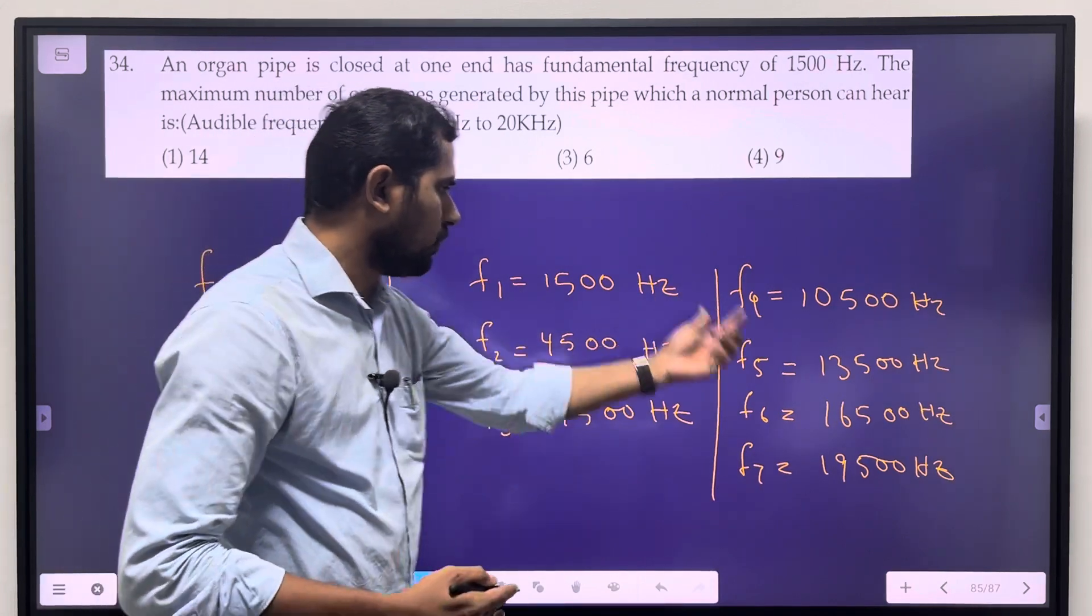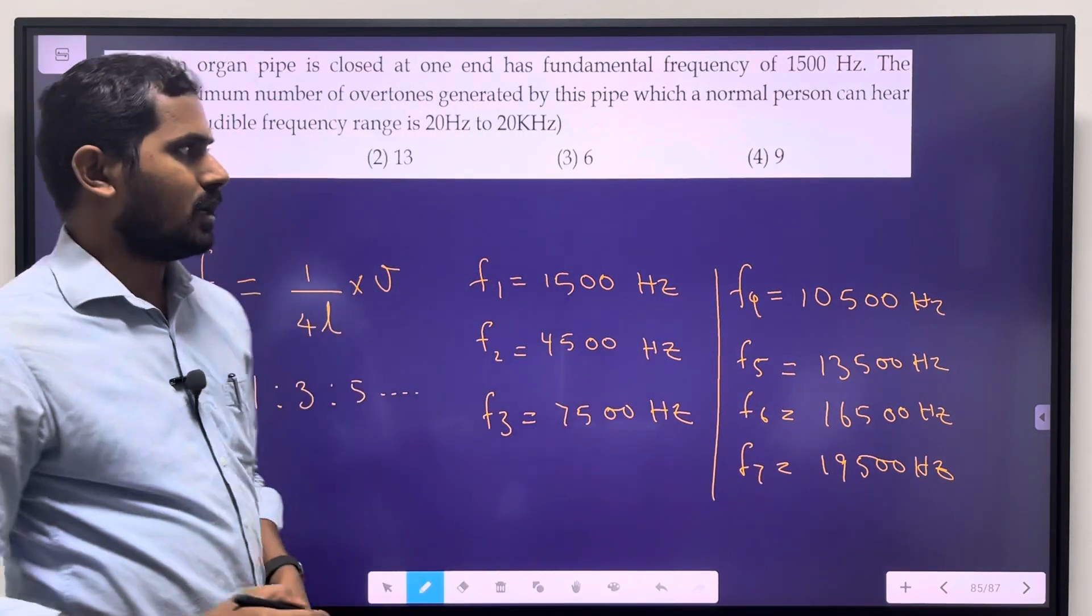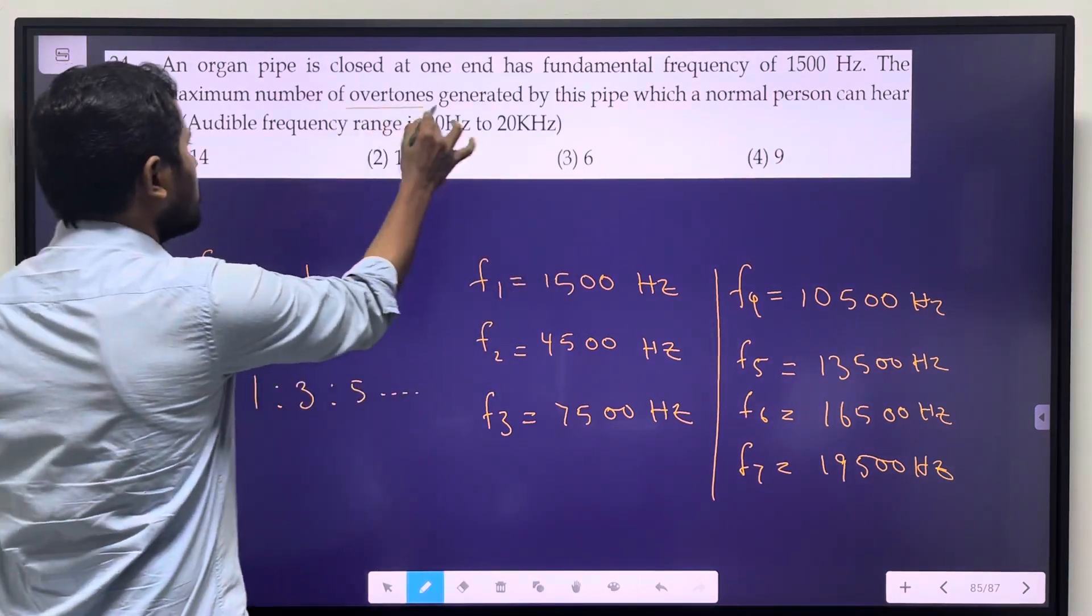1, 2, 3, 4, 5, 6, 7 - seven harmonics total, get it. But the question asks for overtones.